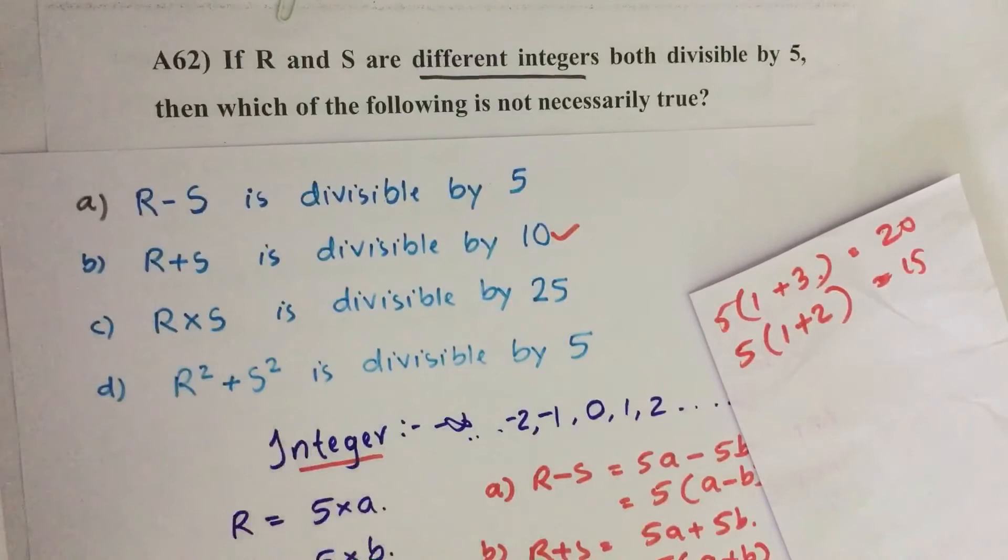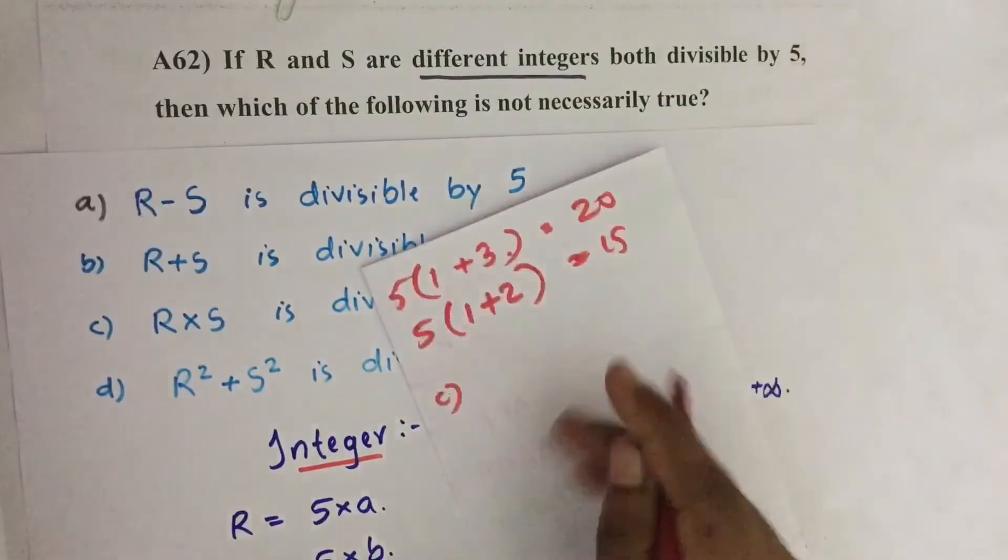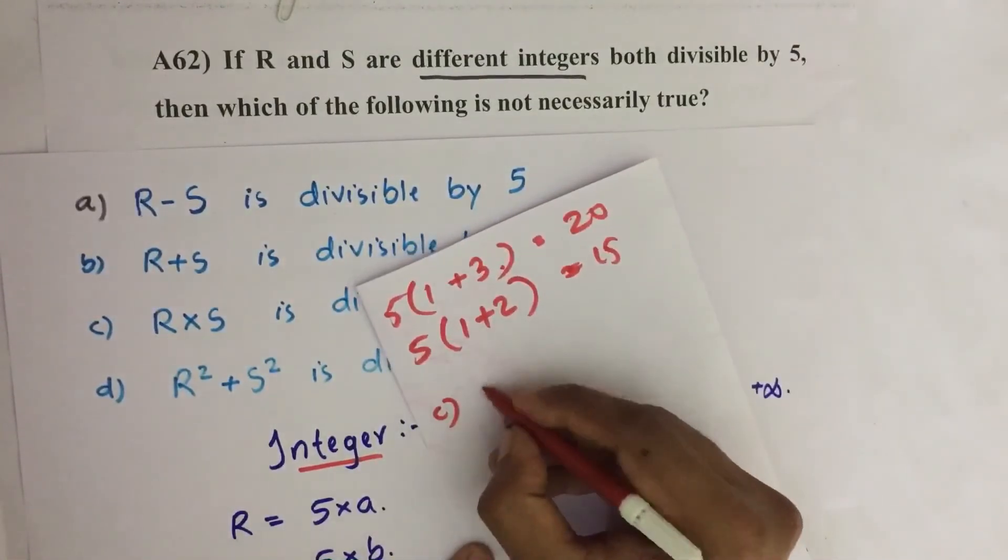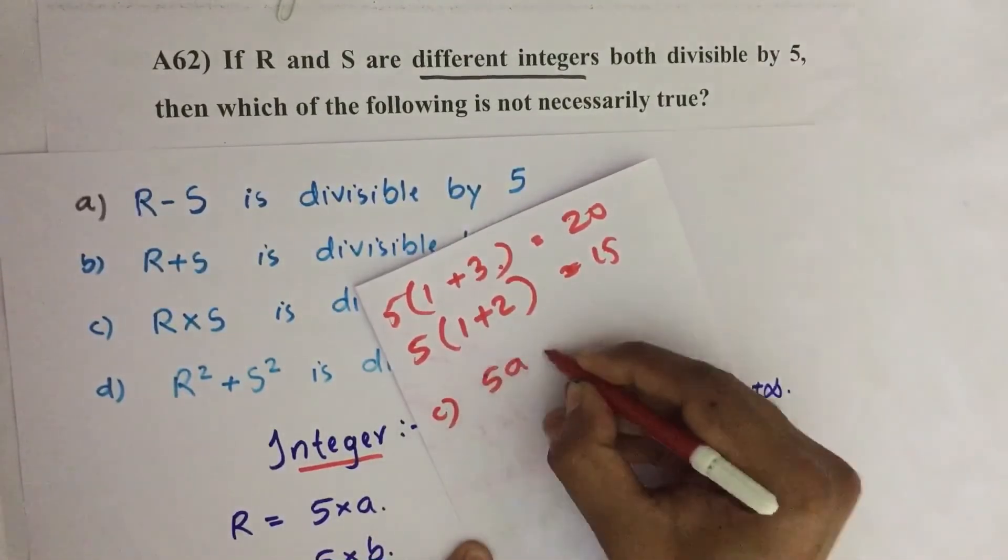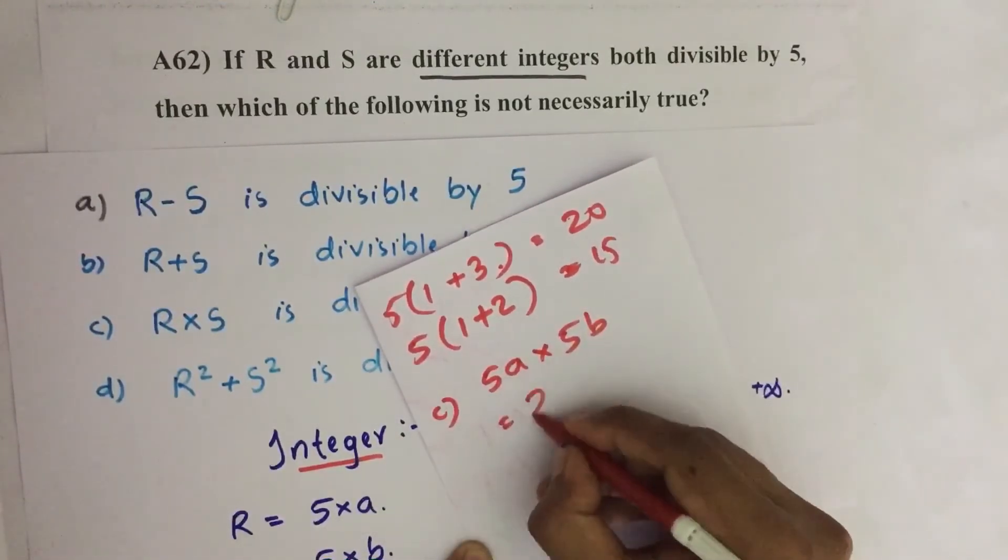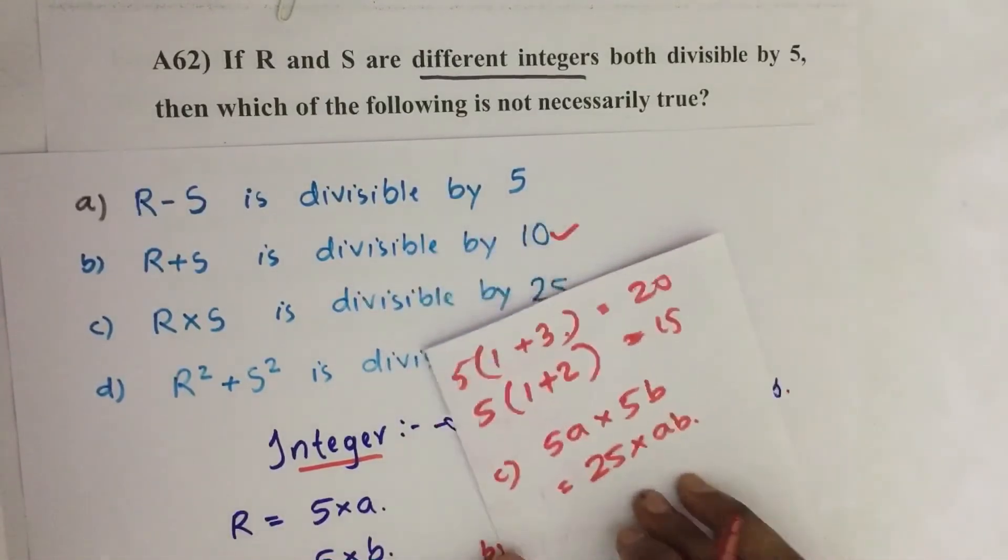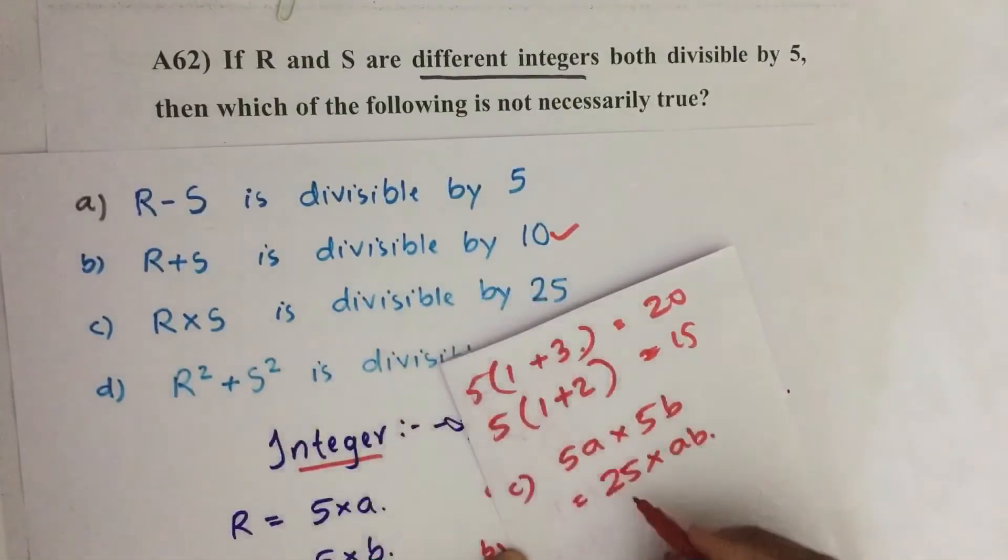Now the third statement: R into S is divisible by 25. R into S, we can write as R equals 5A and S equals 5B. Then we can write it as 25 into AB. So R into S is divisible by 25 all the time.